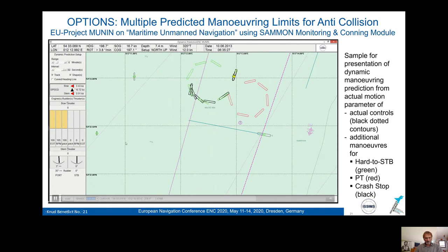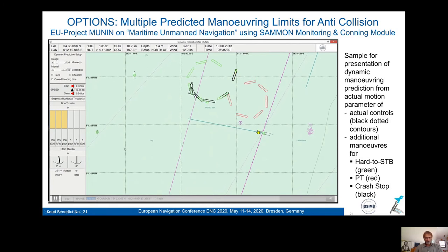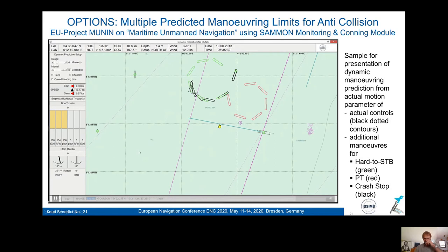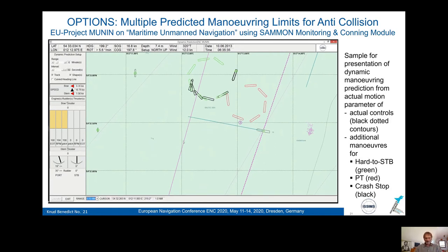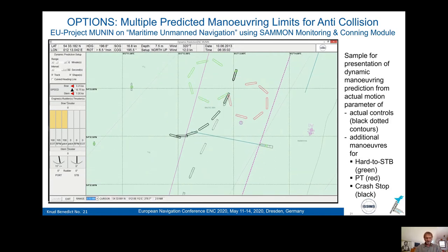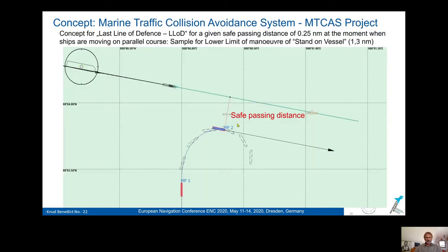The mariner selects the starboard turning option and can see against the other ship that the maneuver might be very successful. The concept also provides additional support to calculate the position and give guidance on where the last line of defense — the last moment for a maneuver — should be taken, using the safe passing distance CPA as reference.